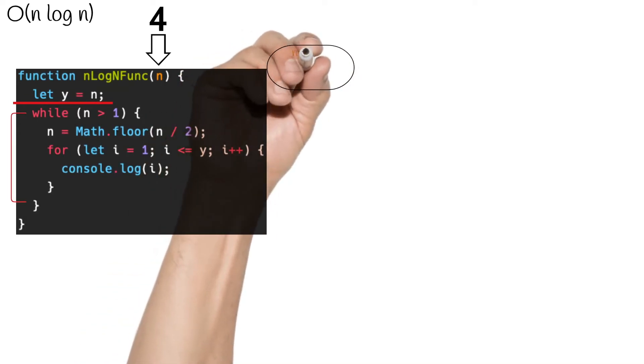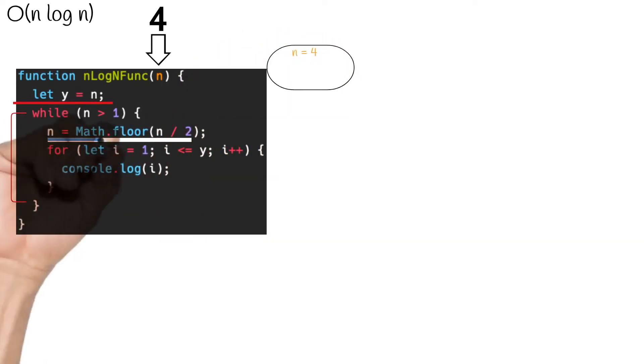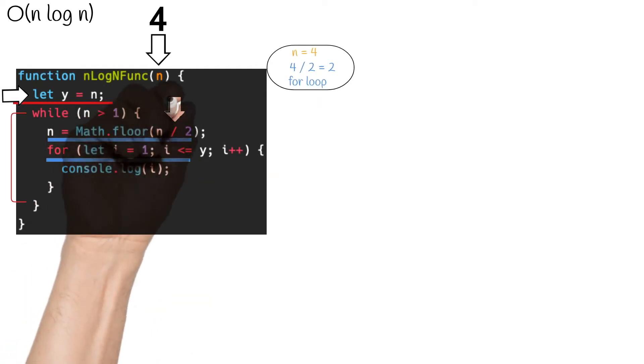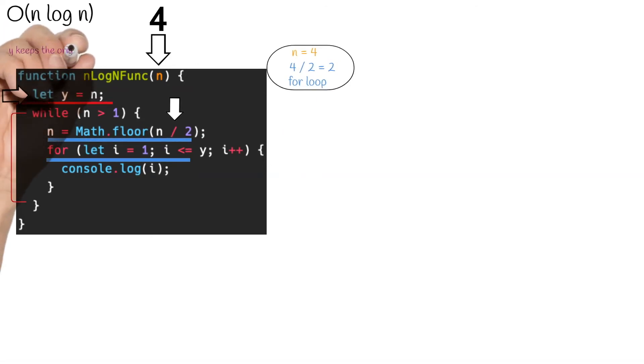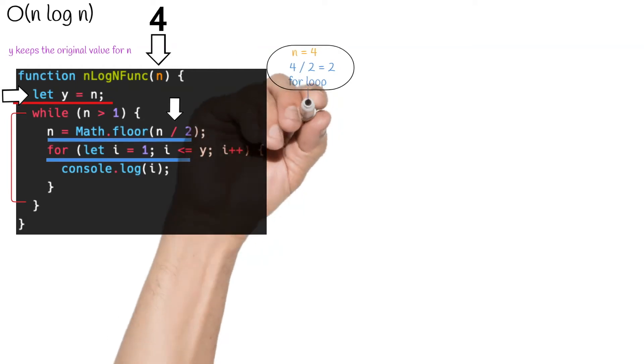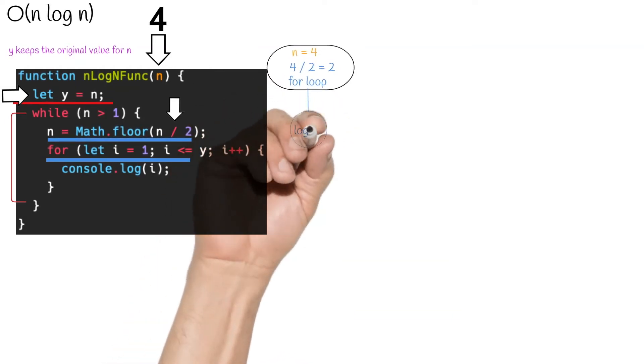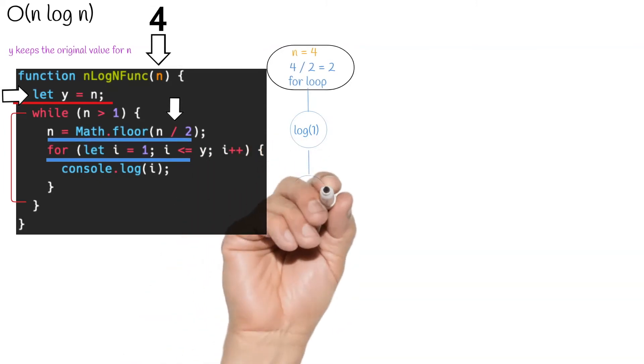For the first iteration of the while loop, n starts off as four, but we divide it by two. So n is now equal to two. Then we get to this line of code, which is the start of a for loop. This is where this variable y comes in. The reason we declared this variable before the start of the loop is because n is getting divided by two for each iteration. This in turn is reducing the size of the variable n. But for this inner for loop, we need it to iterate through the original size of our original n. So we stored the original n in a separate variable. Okay, back to this inner for loop. For each iteration of this for loop up until the size of n, we will log or print the value for i.